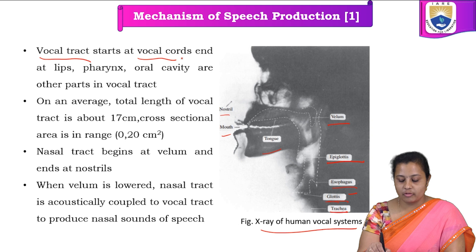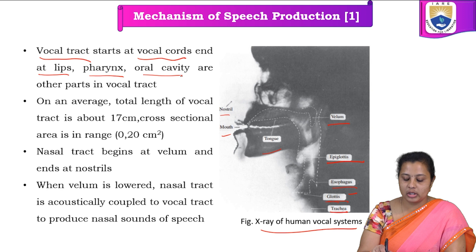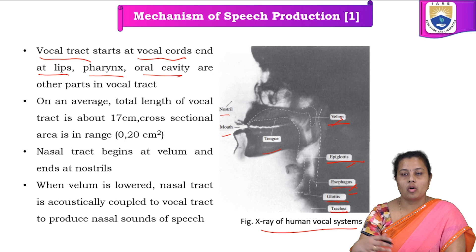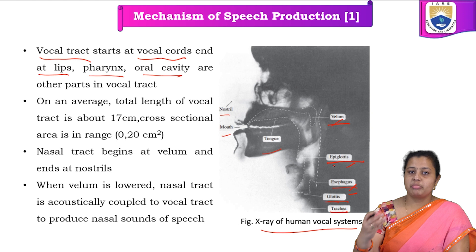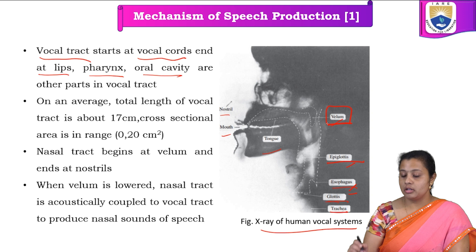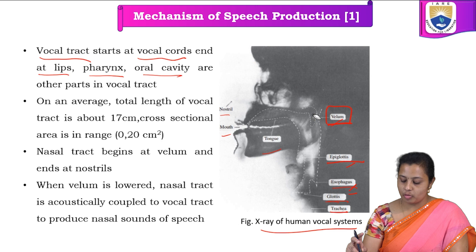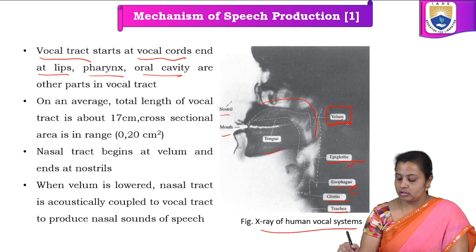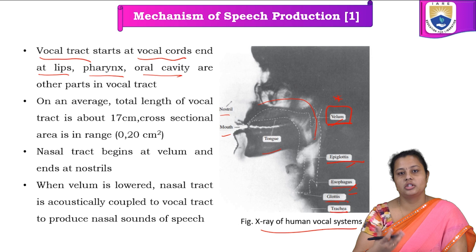Starting from the bottom, we have the trachea, glottis, epiglottis, valium, tongue, mouth, and nostrils — all these parts contribute to our speech processing system. The vocal tract starts at the vocal cords and ends at the lips. In between, we have the pharynx, oral cavity, esophagus, epiglottis, and valium. Each part plays an important role. For example, the valium acts like a switch.